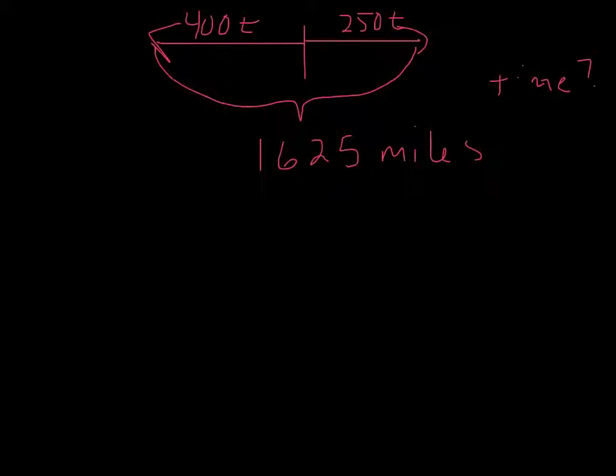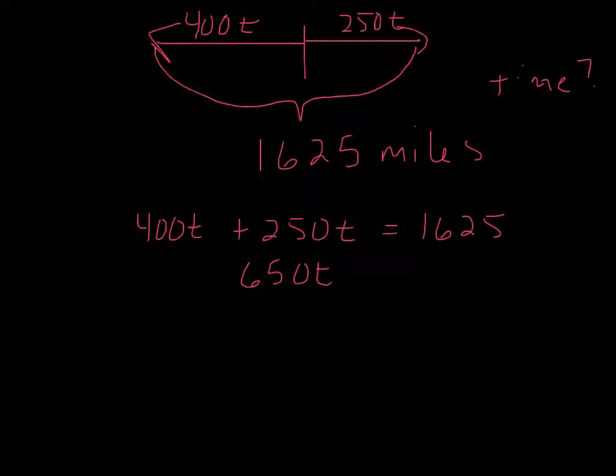If one's going one direction and one's going the other direction, we have to add them together to get our total distance. So we have 400t plus 250t is going to equal 1,625 miles. 400 times the number of hours they fly plus 250 times the number of hours they fly equals 1,625 miles total. So let's solve it. We have like terms, so we combine them. You get 650t equals 1,625. Divide by 650 on both sides.